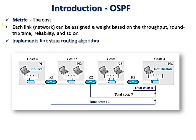The metric used in OSPF is cost. This cost is assigned as a weight based on throughput, round trip time, reliability, and other parameters. The least cost path is determined using the link state routing protocol, which implements Dijkstra's algorithm.